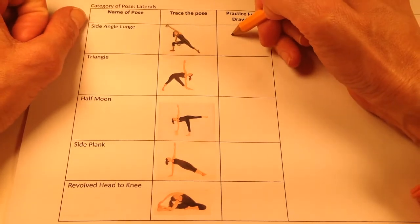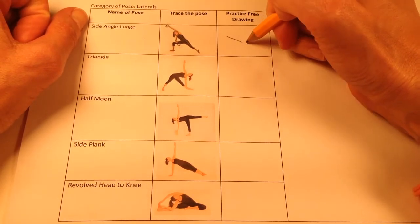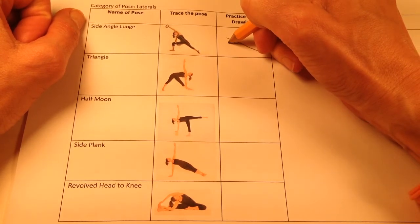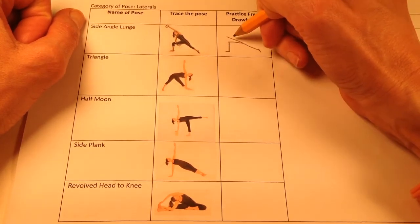Now I'll practice free drawing. Here's the torso, the back leg, the back foot. This is the front leg, bent 90 degrees, and the front foot.